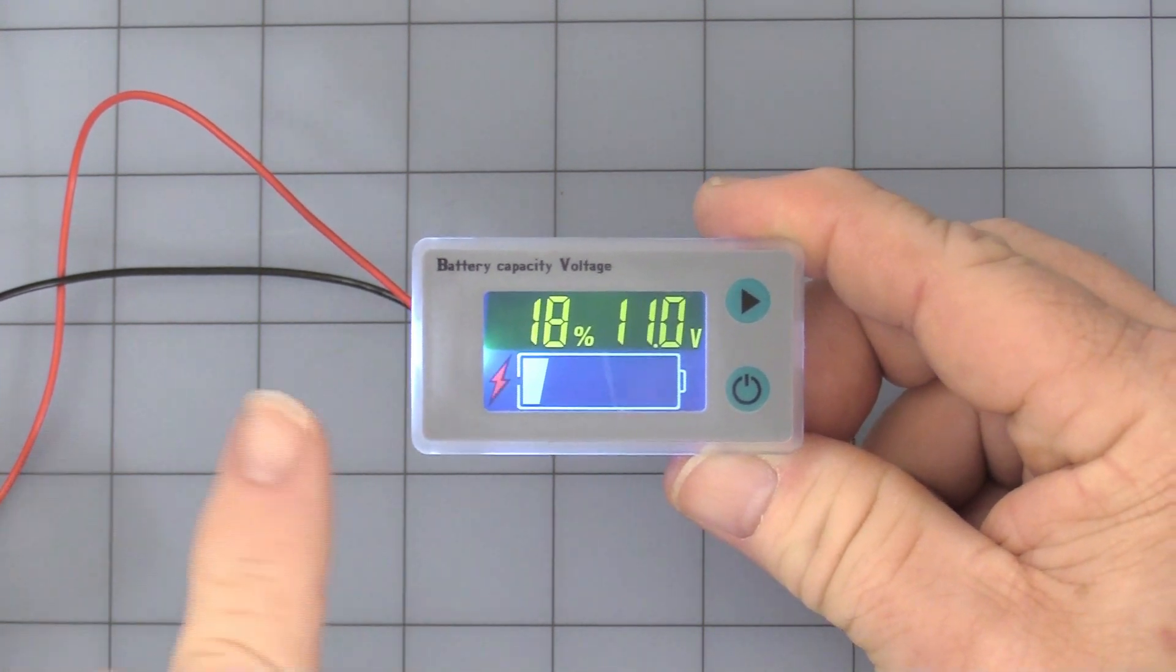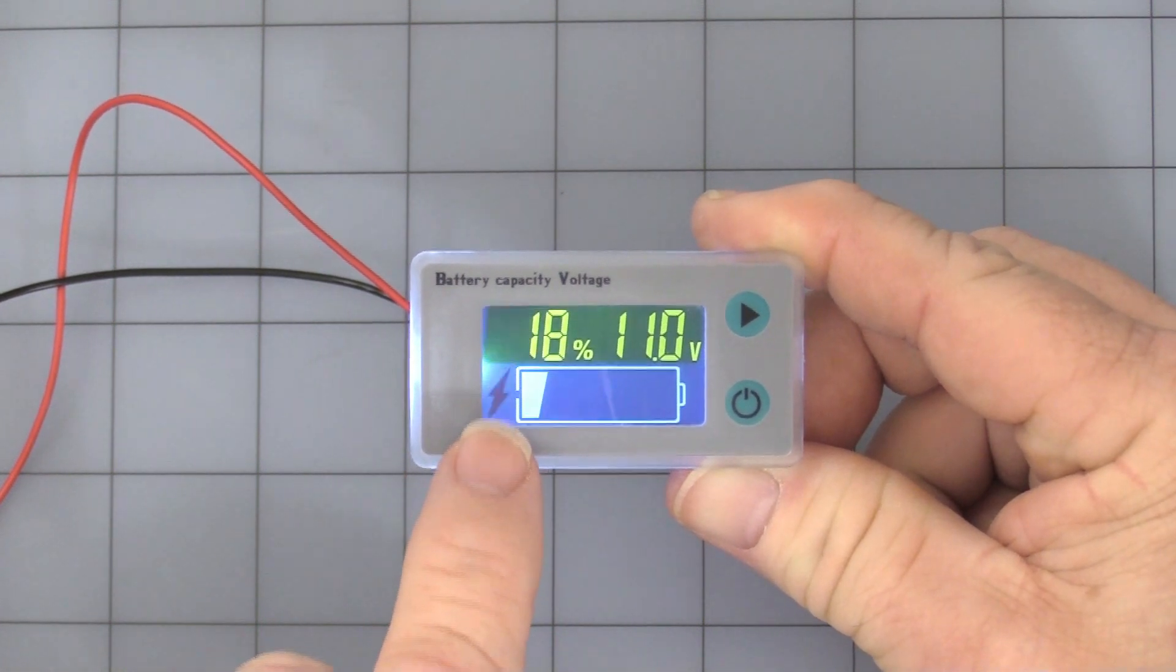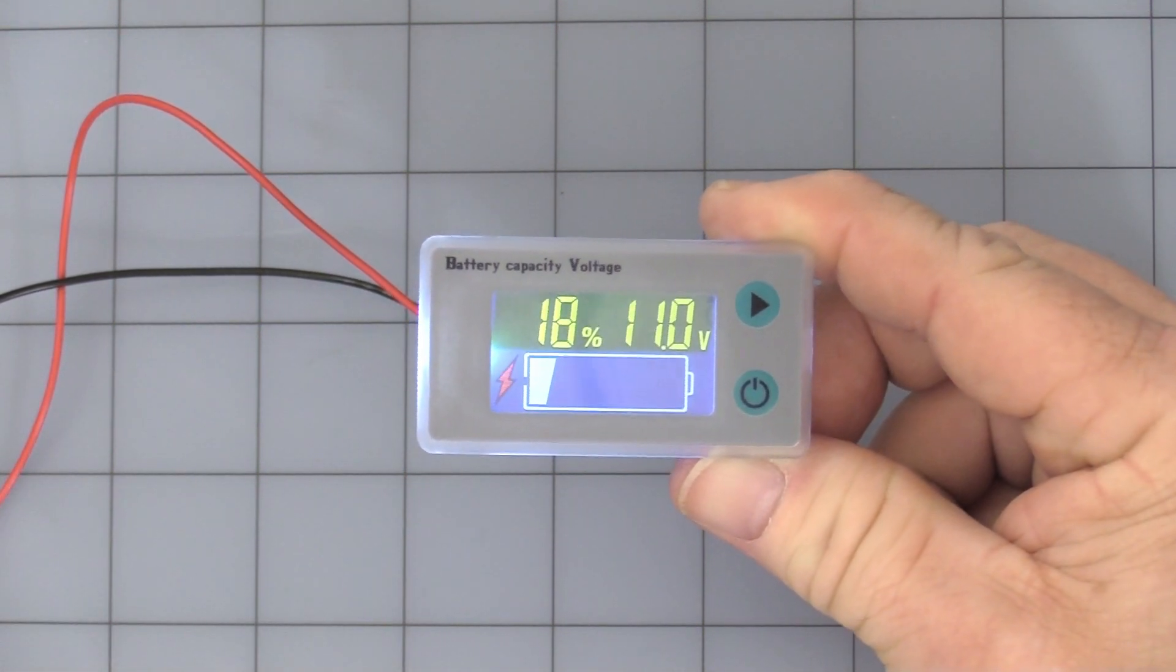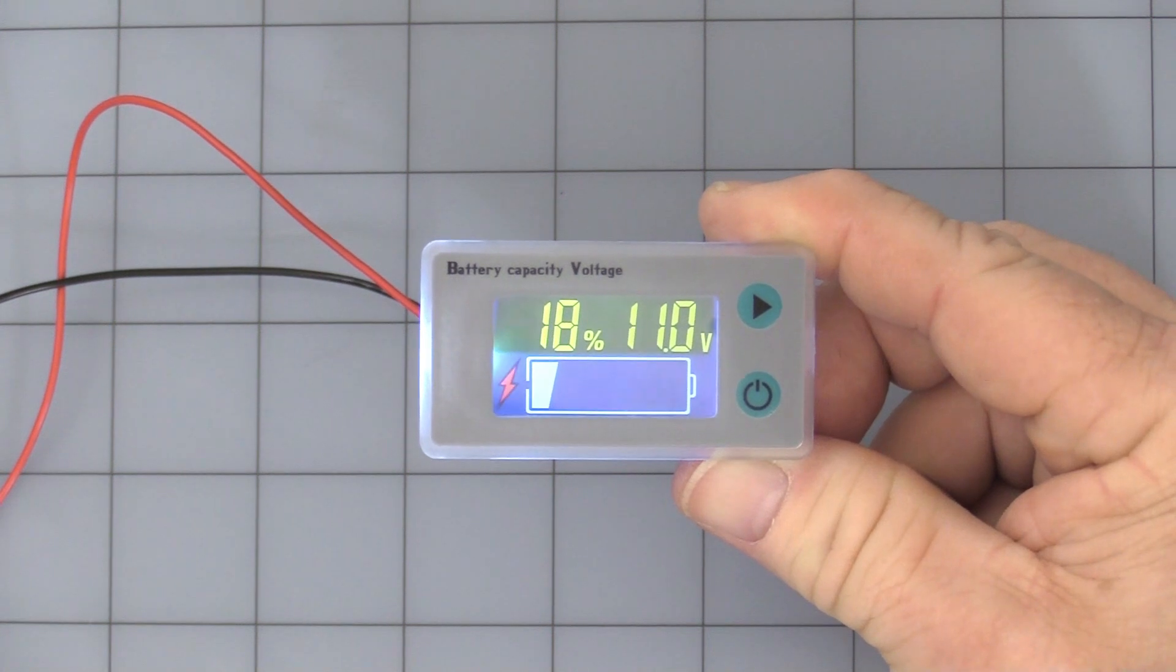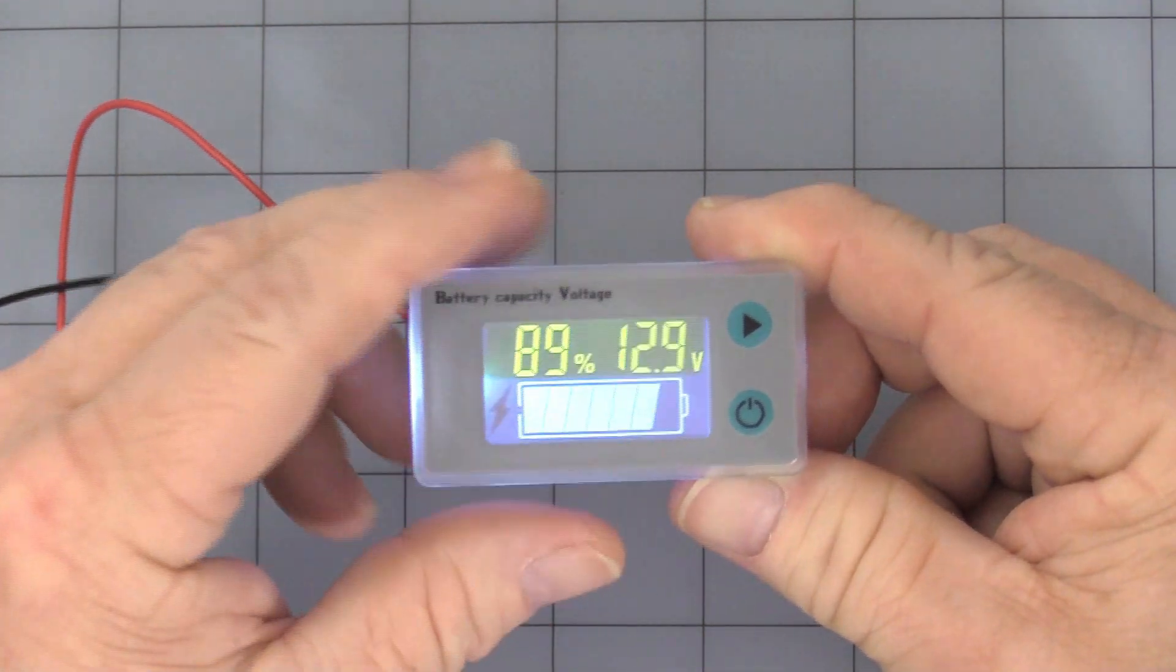So once you get below 11 volts, it's just right at the trigger point. You have a little red flashing lightning bolt letting you know that there's a warning that goes away as soon as it gets back above.